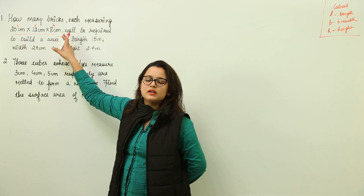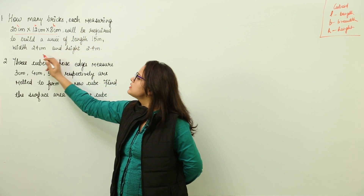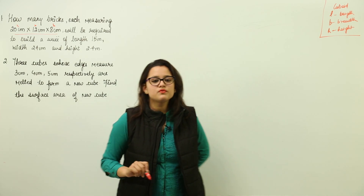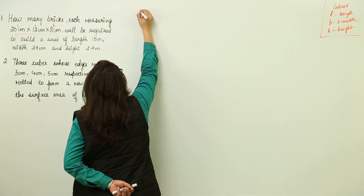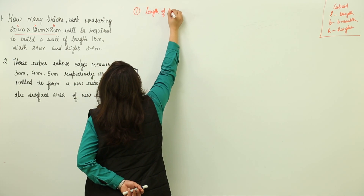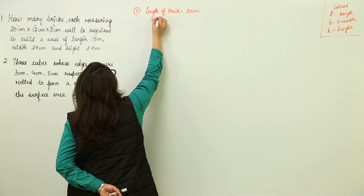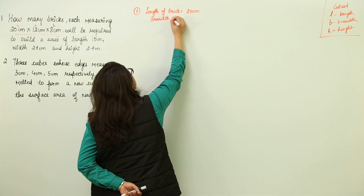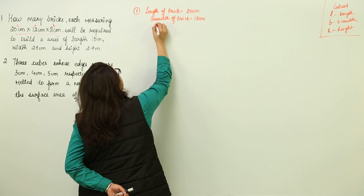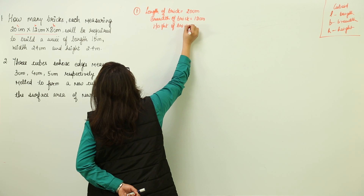The brick measurements have been given. They are asking how many bricks will be required to build a wall of length 15 meters, width 24 centimeters, and height 2.4 meters. So first let us write down whatever data is given: length of brick = 20 centimeters, breadth of brick = 12 centimeters, and height of brick = 8 centimeters.